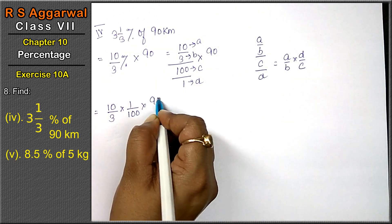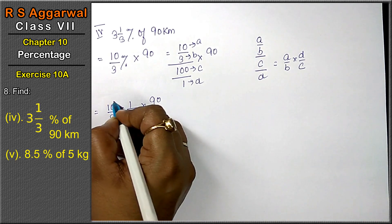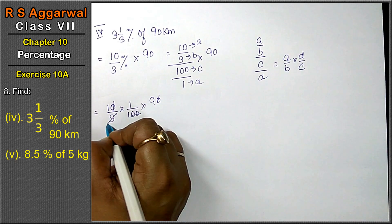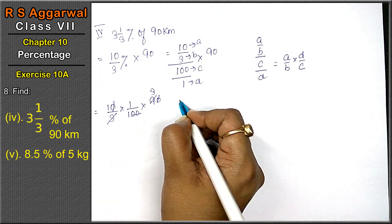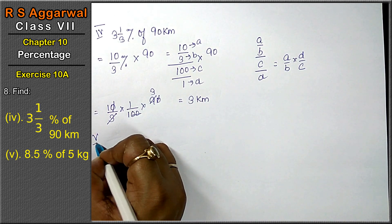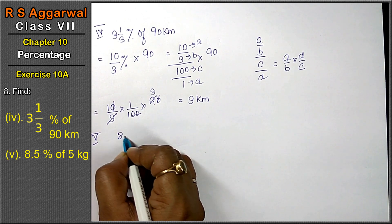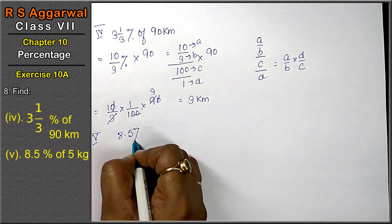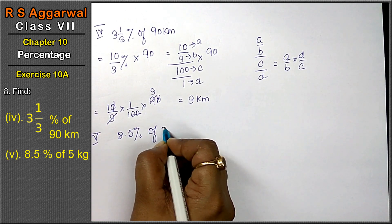Now two zeros cancel. 3 ones are 3, 3 threes are 9. The answer will be 3 kilometers. Let's do fifth part: 8.5% of 5 kg.